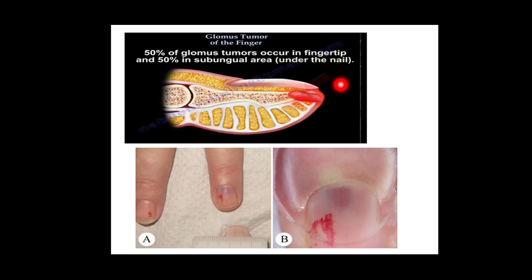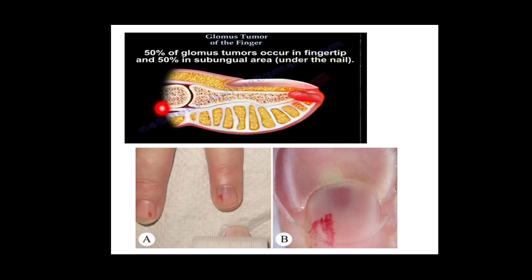This is how it looks like. This is the tip of the finger. 50% of glomus tumours affecting the finger are at the fingertip, and the remaining 50% are under the nail (subungual). A smaller number is seen in the middle phalanx. Here you can see the bluish discolouration, shown more zoomed up.